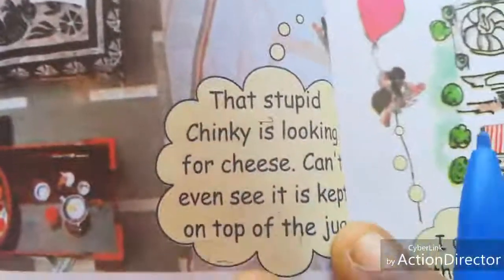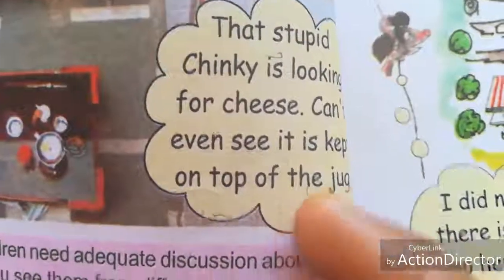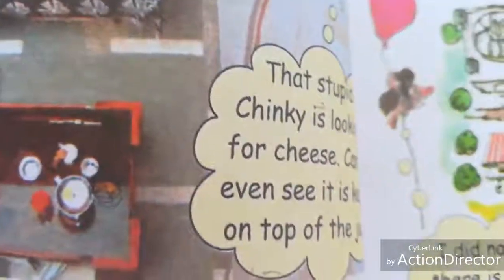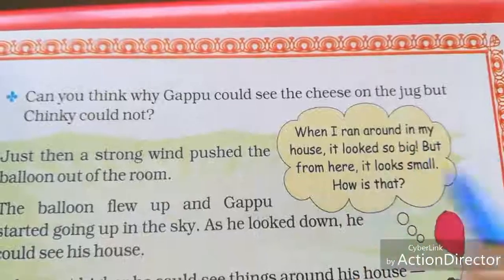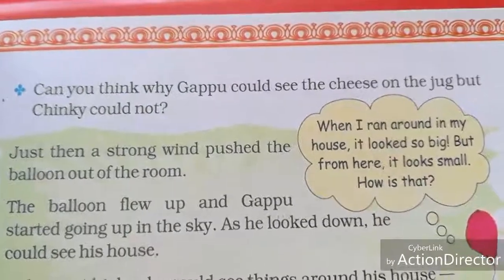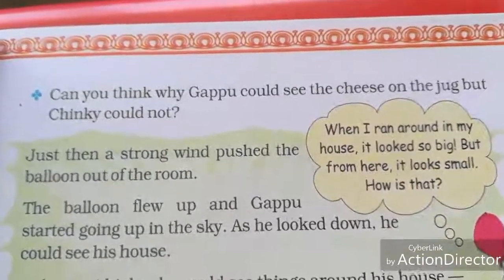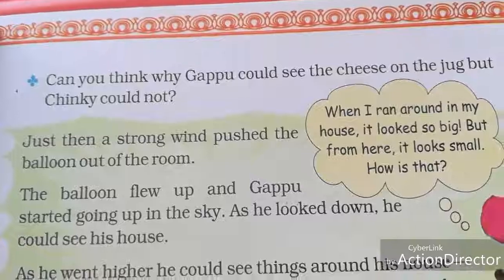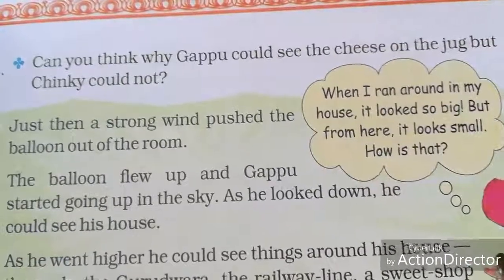Gappu said the chicken is looking for cheese. She can't see it because the cheese is kept on the top of the jug. Can you think why Gappu could see the cheese on the jug but the chicken could not? Because Gappu sees things from above, so he could see the cheese placed on the jug. On the other hand, the chicken was running on the floor, so she can't see the cheese.